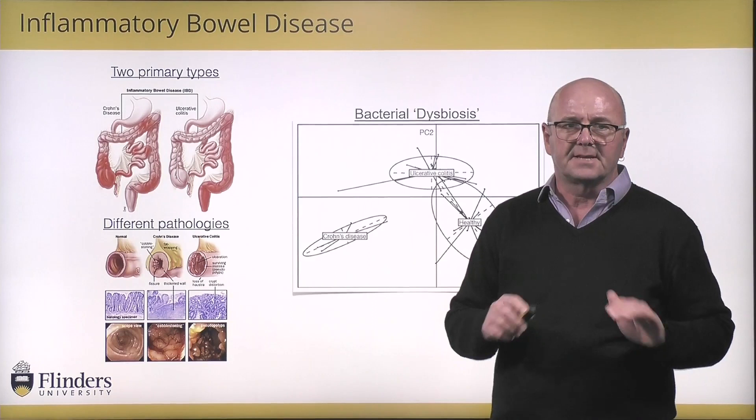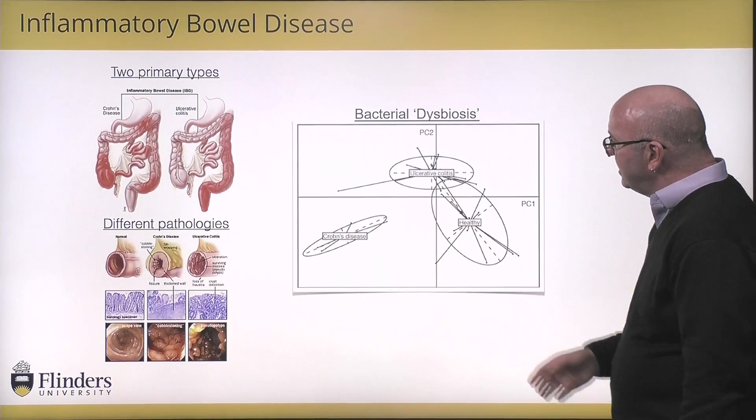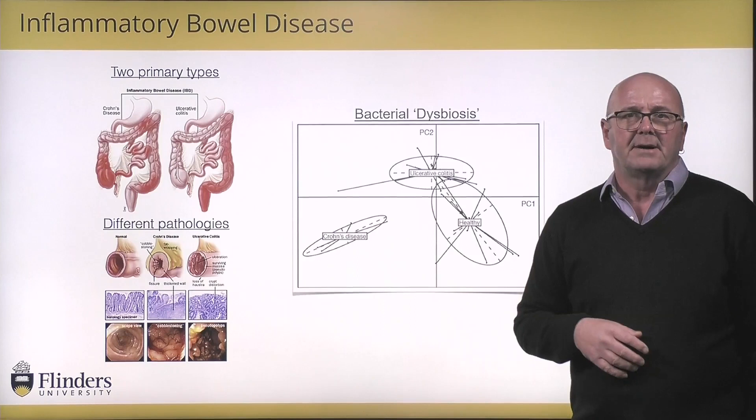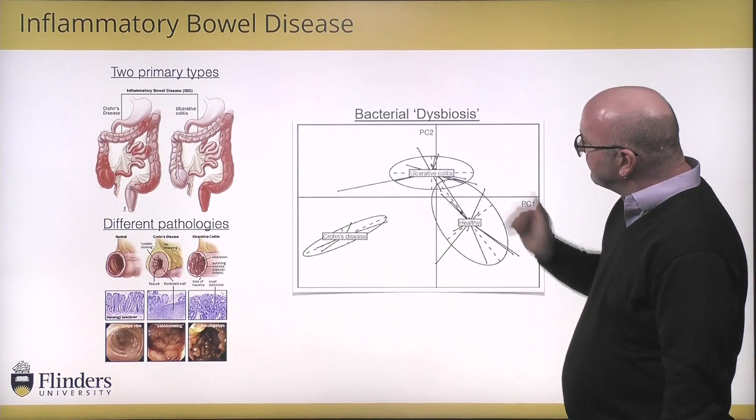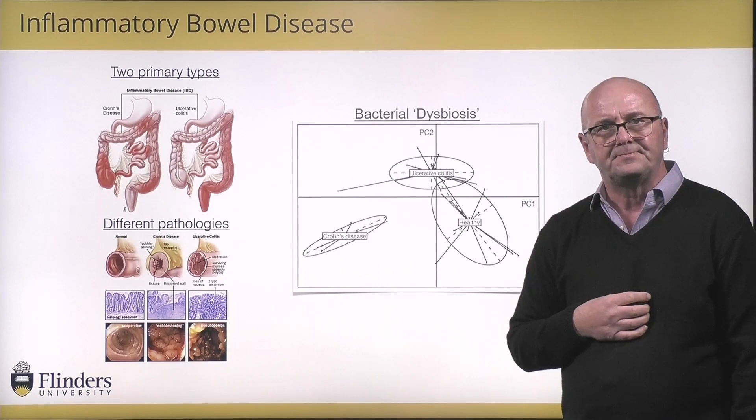such as Crohn's disease or ulcerative colitis. They're separate diseases, they have separate pathologies, and they have separate effects. They have separate microbiology, and when we look at the microbiology — this is a principal component plot of a typical bacterial dataset that you would see from either a healthy person, somebody with ulcerative colitis, or somebody with Crohn's disease — we always see the signature separation of the different disease states.